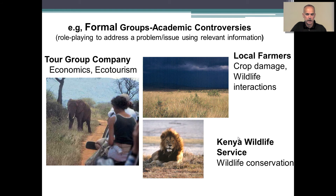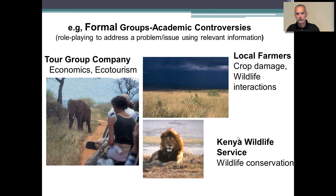In this particular case, I like to use three stakeholder groups: a tour group company that has economic and ecotourism interest; the Kenya Wildlife Service, which is the professionals in Kenya responsible for wildlife conservation; and local farmers and landowners concerned with crop damages and wildlife interaction. In this formal cooperative group activity, students do role-playing using information provided or gathered through research, and collectively work together in a multidisciplinary team to come up with the best solution to address a particular controversy and justify that approach.